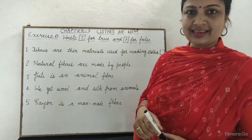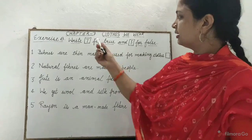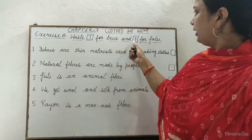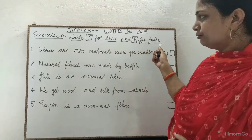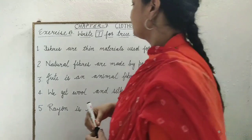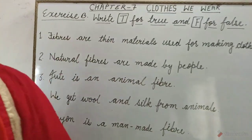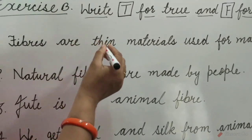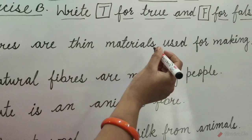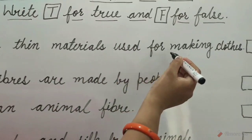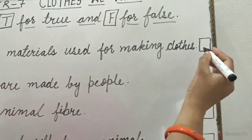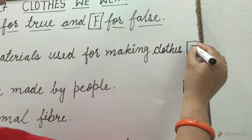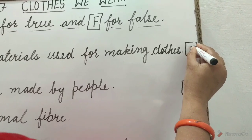Exercise B: Write T for true and F for false. 1. Fibers are thin materials used for making clothes. This is true, so write T in the box.